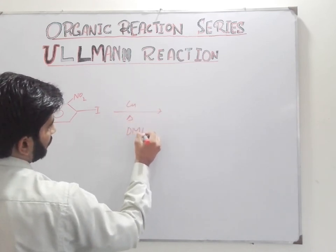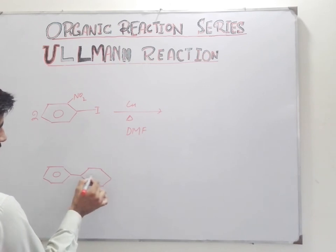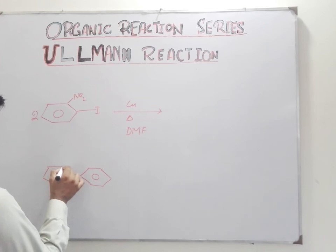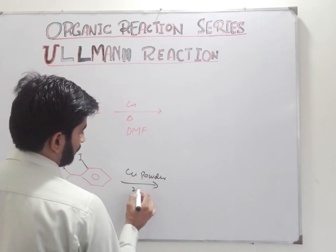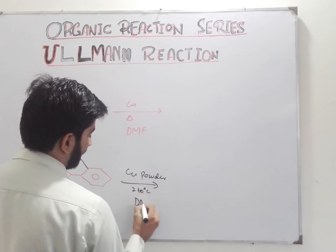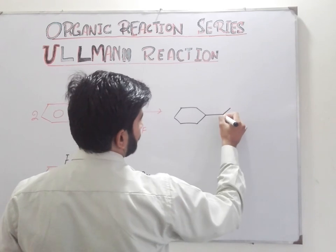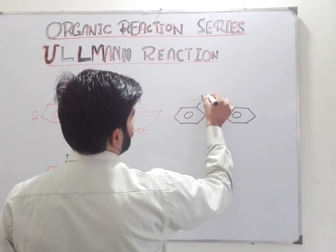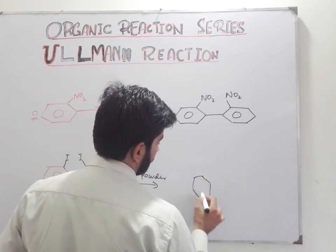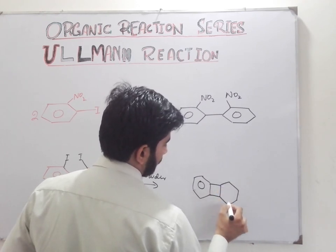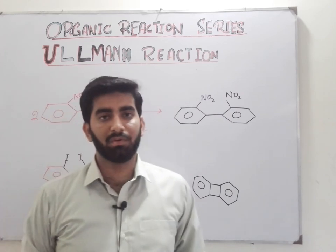Now we discuss some examples of the Ullman reaction. We add copper powder, temperature is 210°C, and dimethylformamide is used as a solvent. Then there is formation of biphenyl and formation of this product. Similarly, the reaction has been used for ring closure, and there is a variant of both.